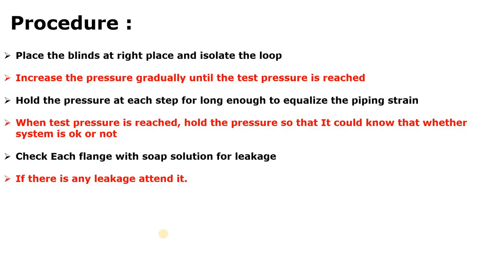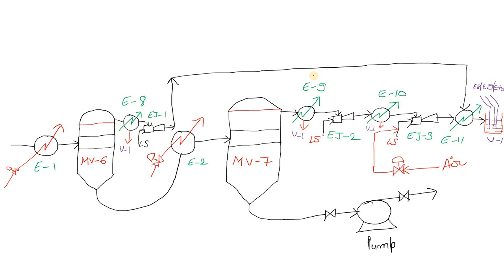Now, what is the procedure for the pneumatic test? First, place the blinds at the right place and isolate the loop. Here is a diagram — we have to perform the pneumatic test on this system which is a low pressure, i.e., vacuum section.